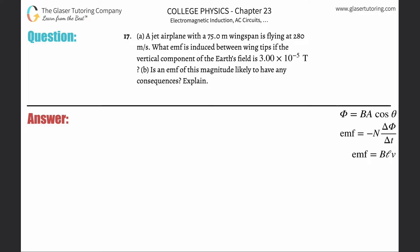Number 17, letter A. A jet airplane with a 75 meter wingspan is flying at 280 meters per second. What EMF is induced between the wingtips if the vertical component of the Earth's field is 3 times 10 to the minus fifth Tesla?